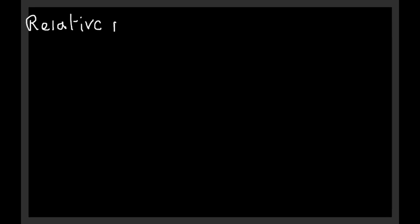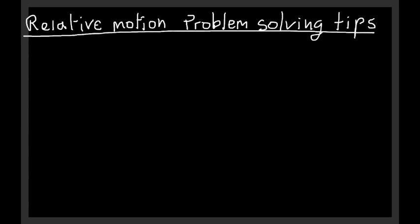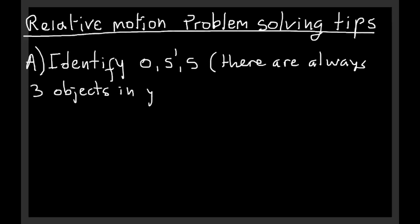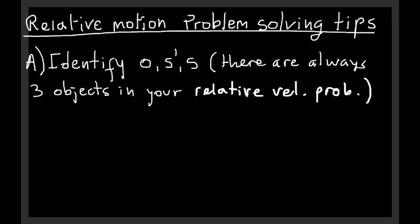In this video I would like to give you some tips to solve relative motion problems. The first thing to do when dealing with this kind of problems is to identify O, S', and S. Remember that there will always be three objects in your relative velocity problem.